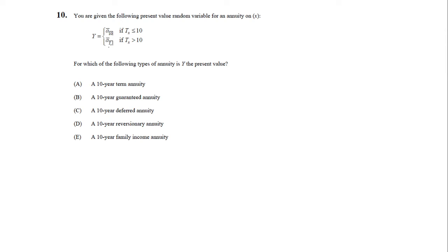So let's say if the person dies when the time of death T_x is less than 10, there's still going to be 10 payments.